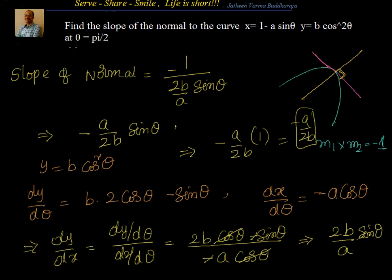To recap: the slope of the tangent to the curve at a particular point equals the derivative of the function dy by dx at that specific point. The slope of the normal, which is perpendicular to the tangent, equals minus 1 by (dy by dx). We got dy by dx equal to 2b by a sin theta, so the slope of the normal equals minus a by 2b sin theta, and at theta equal to pi by 2 the answer is minus a by 2b. We will continue with problems on applications of derivatives. Thanks for your time.